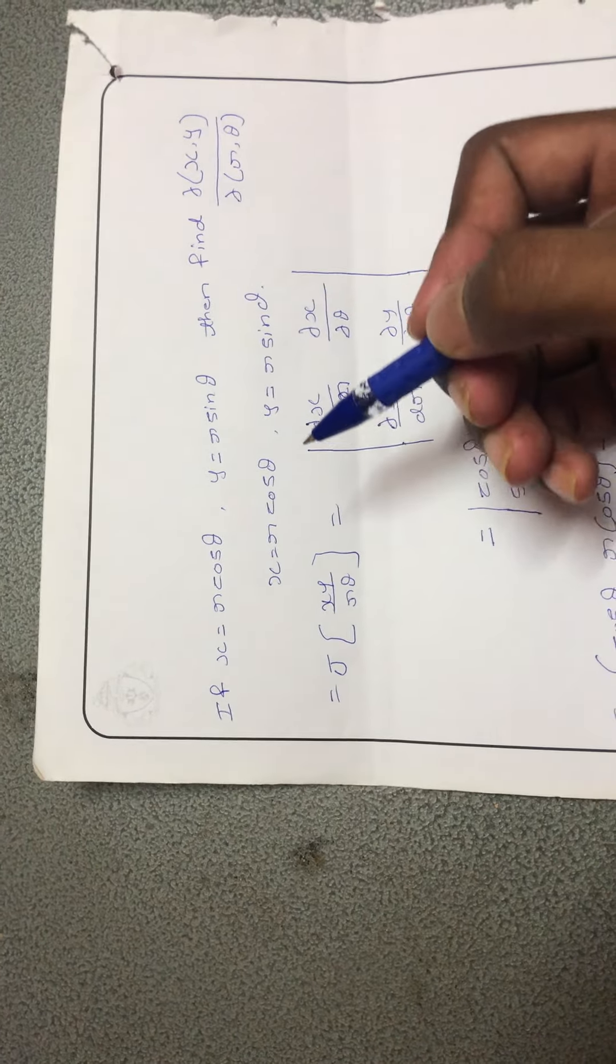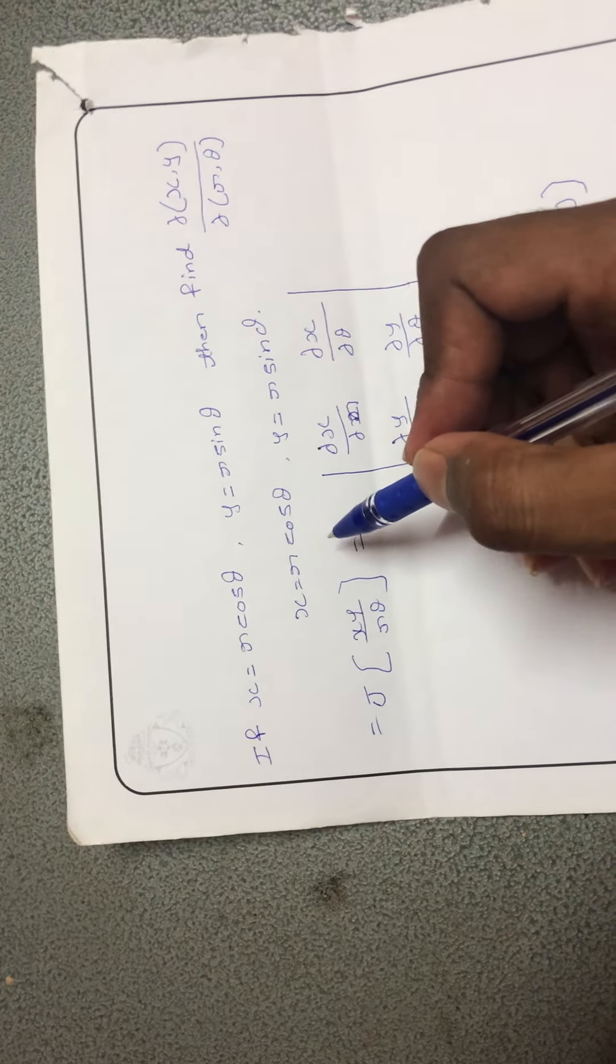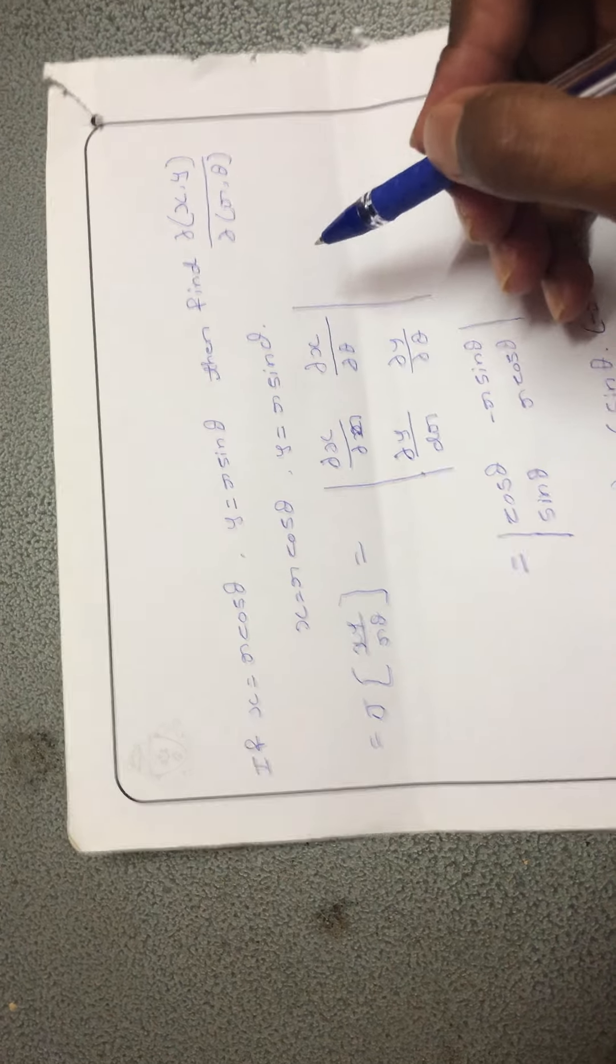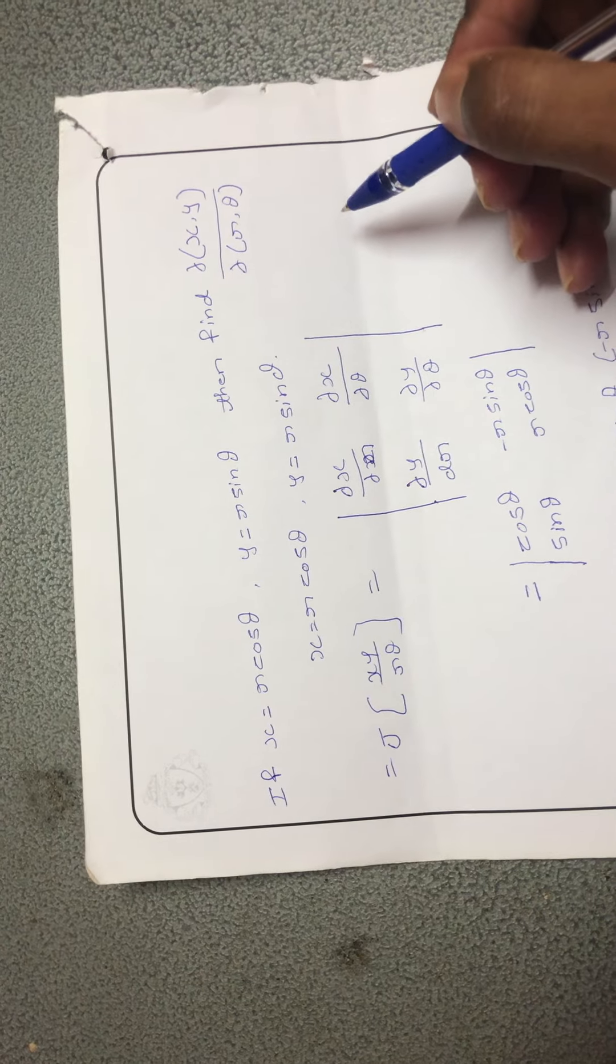This is a tutorial on how to solve partial differentiation problems. If x is equal to r cos theta and y is equal to r sin theta, then find dx and dy by dr and dtheta.